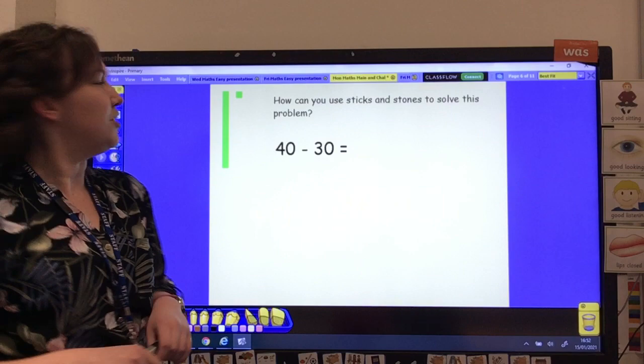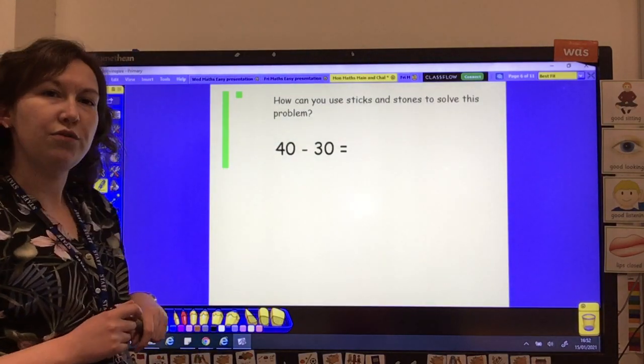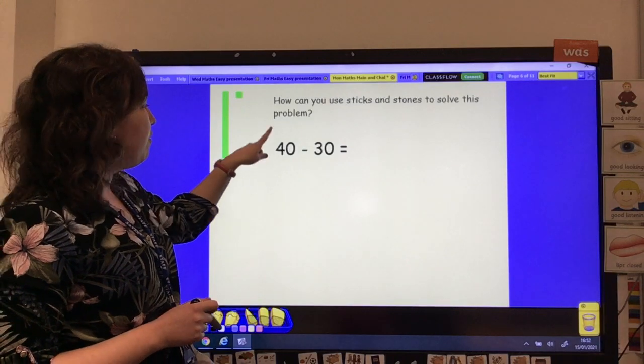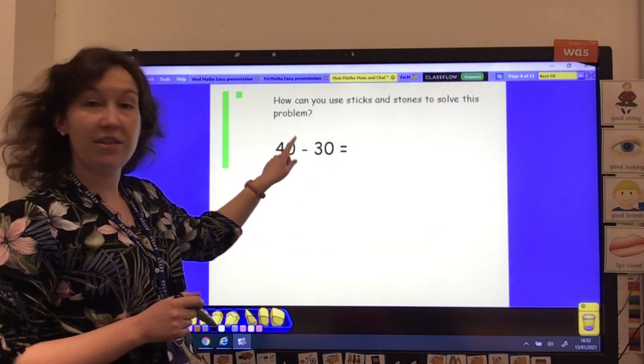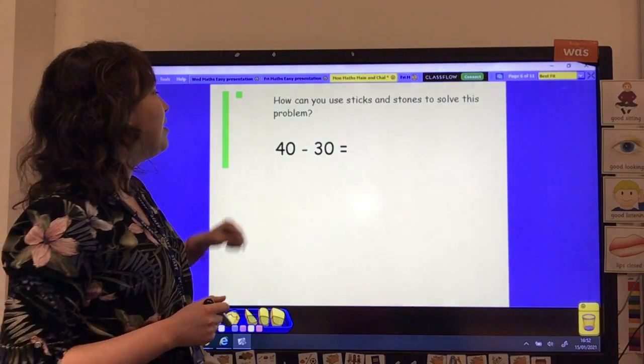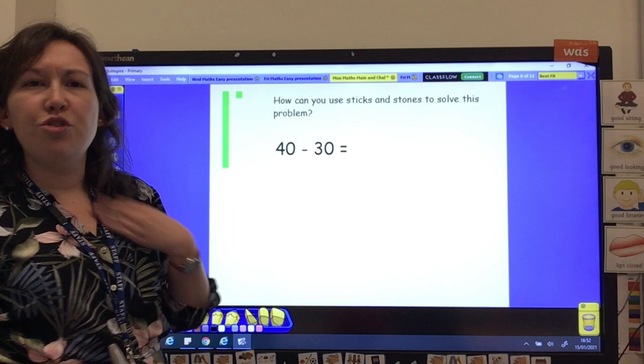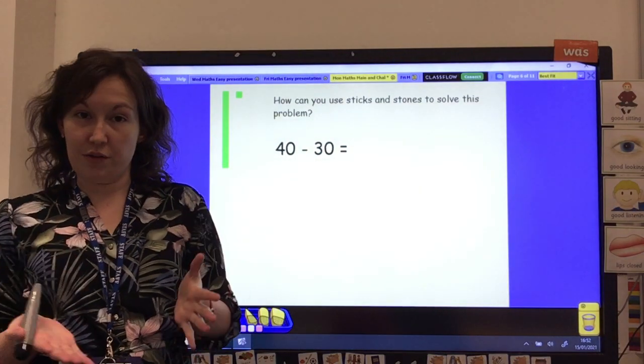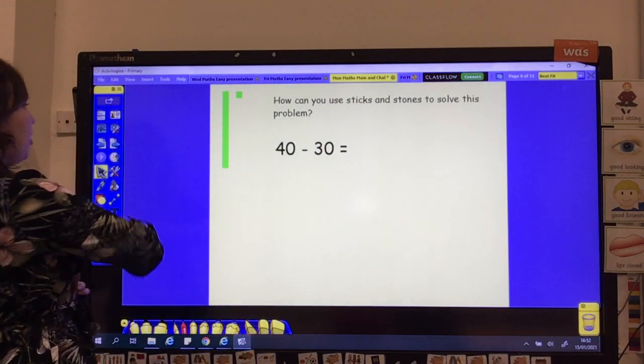So let's have a look at this one because it's a little bit different. So this time, how can you use your sticks and stones to help you solve this problem? So we've got 40, subtract 30. So this time, rather than adding, we are taking away. Now, when we're taking away, it's a little bit different. We don't need to draw both sets of sticks and stones because we're taking some away.